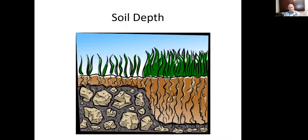Soil depth is really important too. When we're talking about the urban environment, it's critical because a lot of the soils we study are agricultural soils that tend to be deeper. Urban soils tend to be pretty shallow and pretty compacted, so it's a different ballgame. We really have to manage them very differently, and it affects water movement through soils in a serious way.